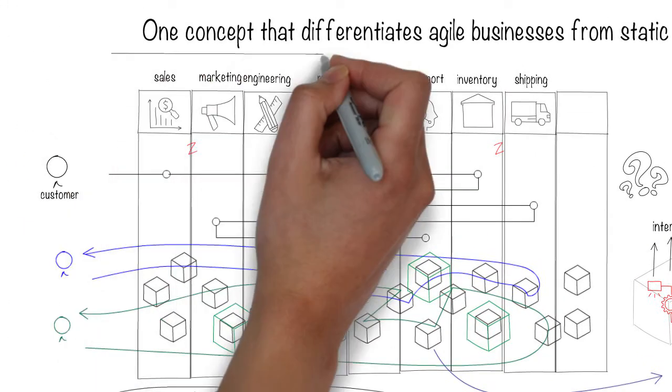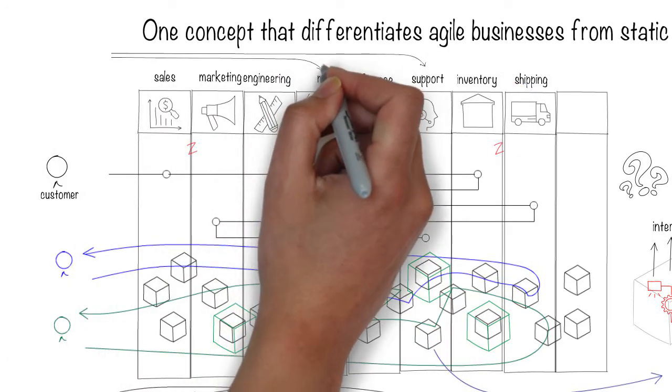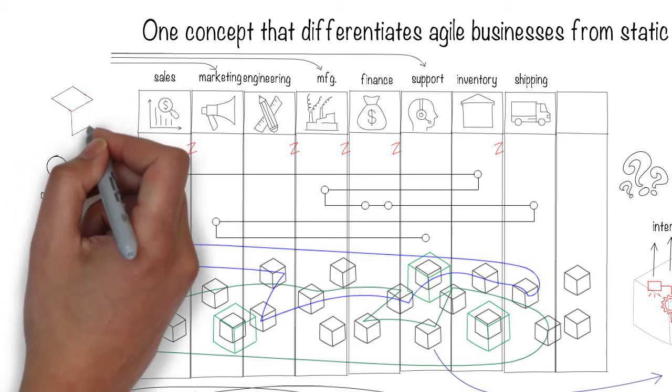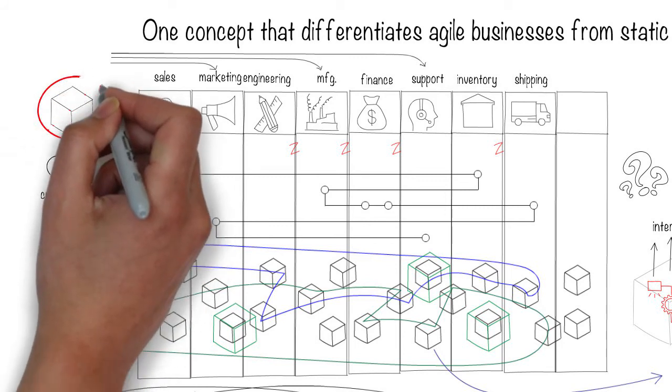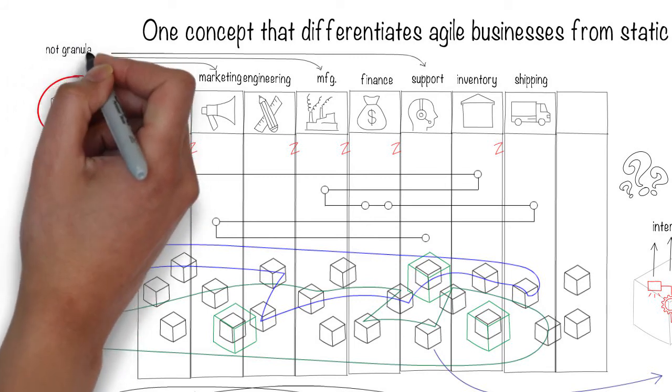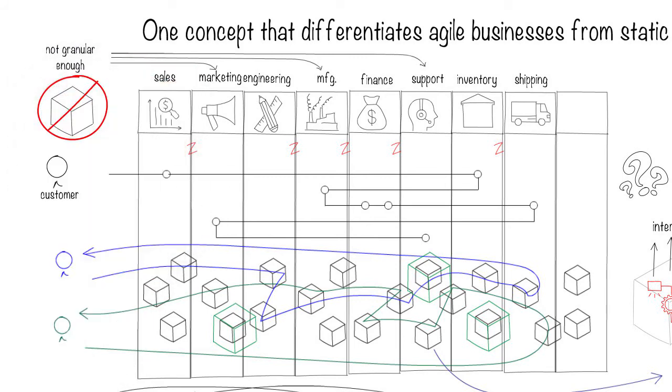Departments are supposed to be high-level modules, but these modules are not granular enough. Factors like politics and disjointed strategies cause them not to behave like modules, all driving friction among them and resulting in poor customer experiences.